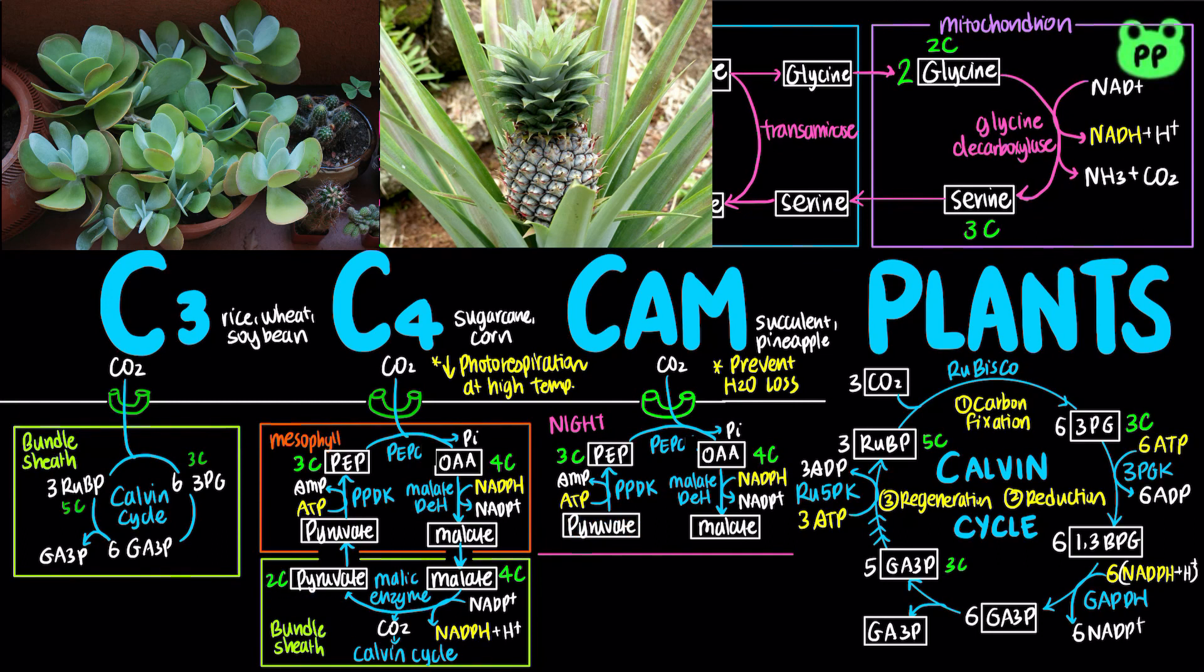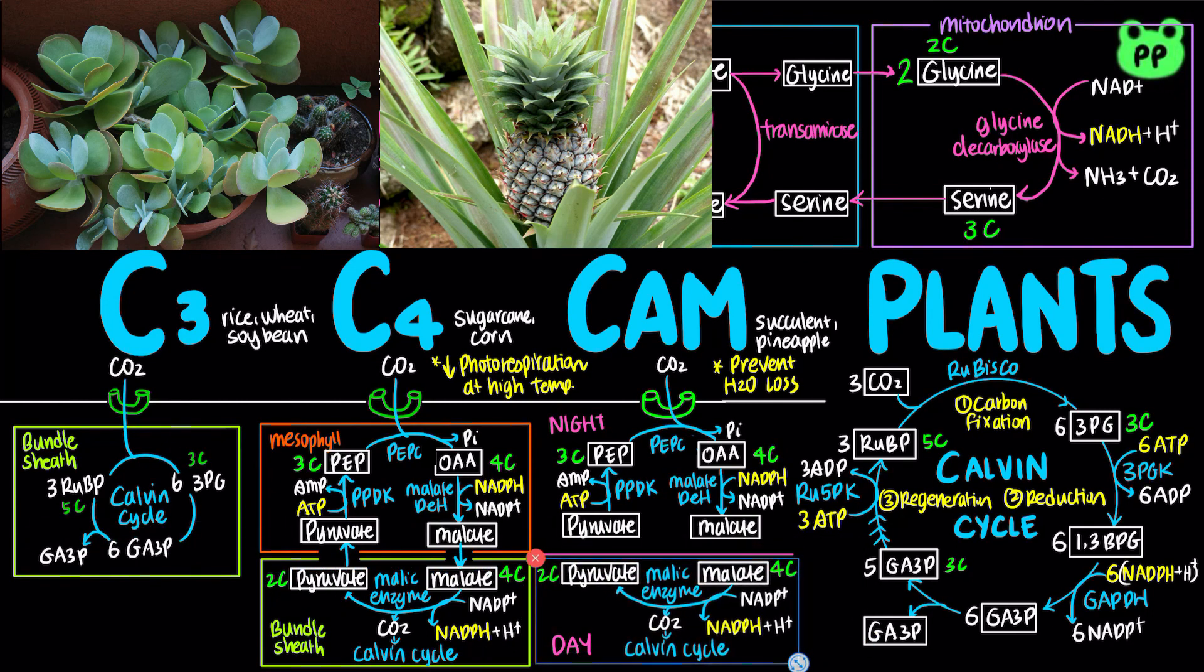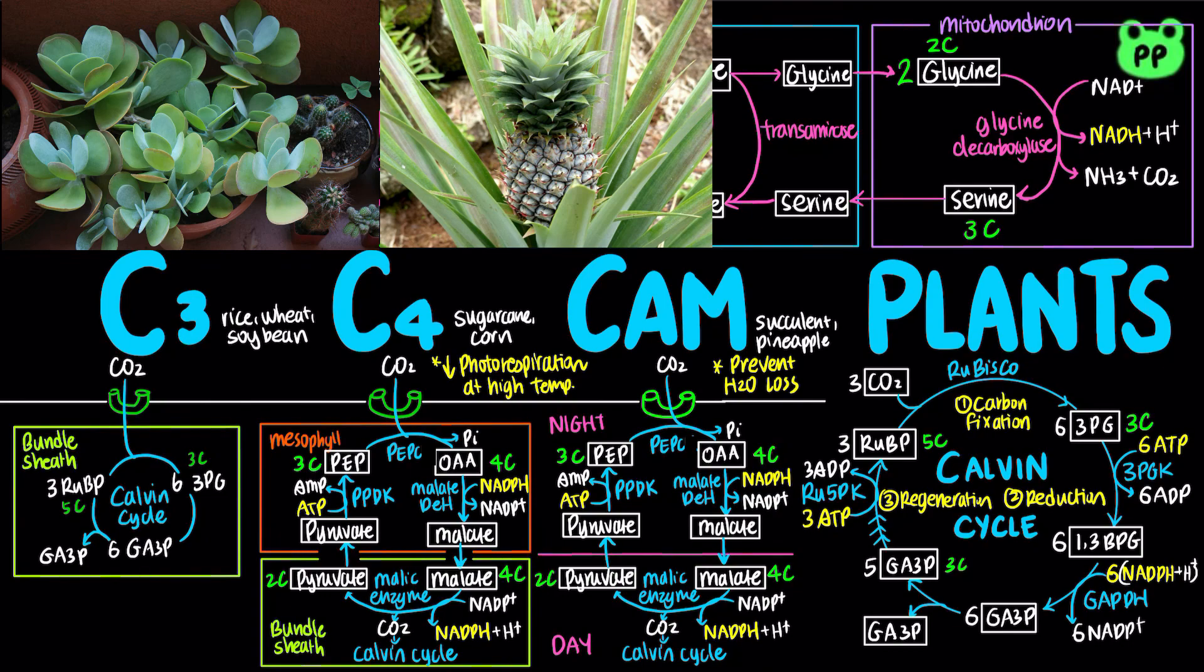During the day, the stomata are closed to prevent water loss. Malate is released from the vacuoles and converted to pyruvate by malic enzyme to release carbon dioxide to enter the Calvin cycle.